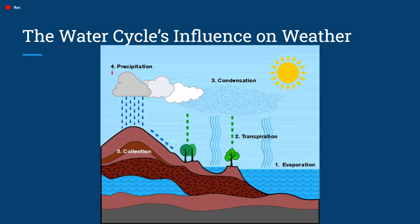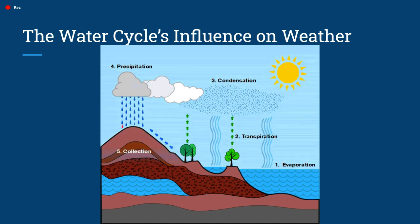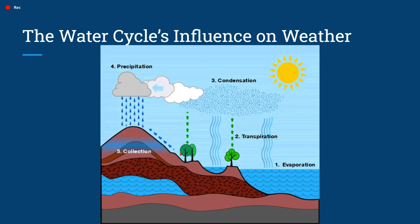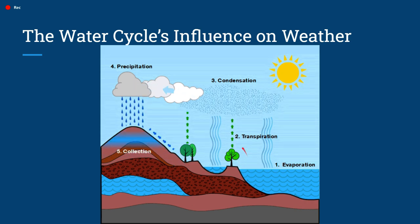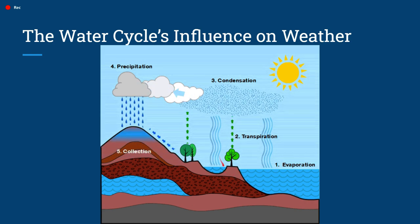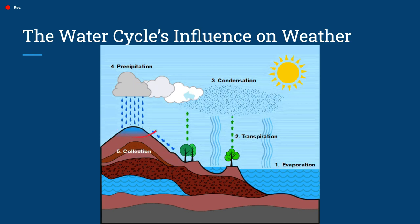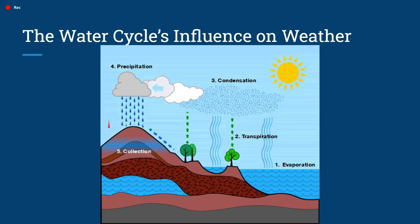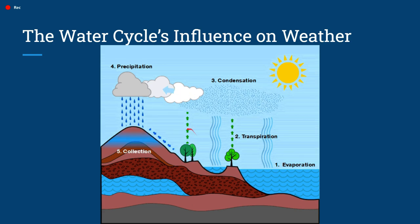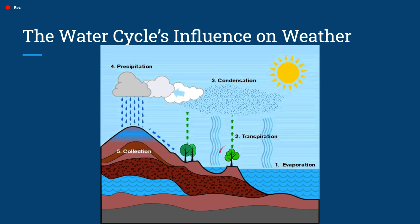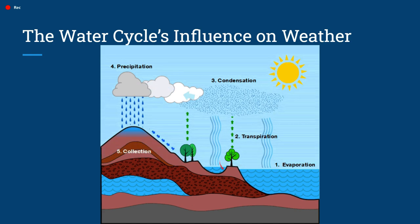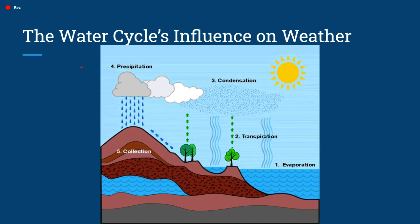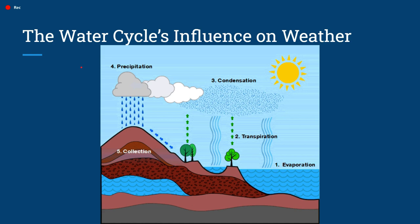Once the clouds get heavy enough with water, it begins to precipitate and fall. It's collected on land and runs back down into the water. The water cycle definitely has the most important influence on weather because without it, there wouldn't be thunderstorms or any form of weather or life-sustaining rain. Also consider the idea of transpiration, where water is evaporating off of leaves — they include that in this little graphic here. This is just a brief overview of the water cycle.